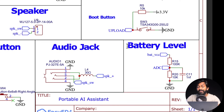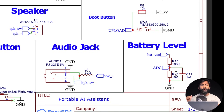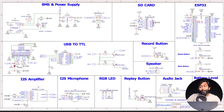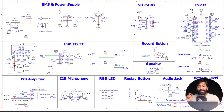Last but not least is the battery level circuit. We are constantly monitoring the battery level, so as soon as the battery level goes below the threshold value, the device will say 'battery low, please charge' — something like that. That's the complete schematic. We'll be providing this PDF file of the schematic in the description so you can check it out.